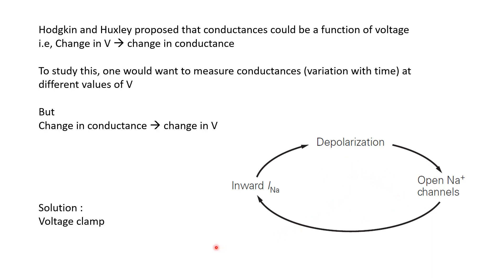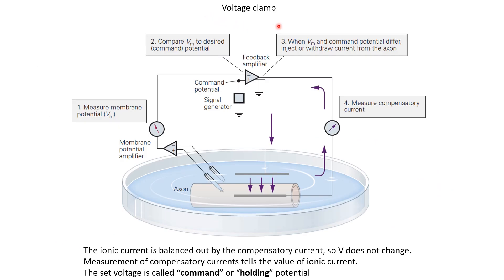A solution to this problem is obtained by voltage clamp, which allows us to fix the voltage at a particular value. Let us see how voltage clamp actually works. Let us say we have a neuron in a petri dish — this is an axon whose voltage we are trying to clamp or fix at a particular value.